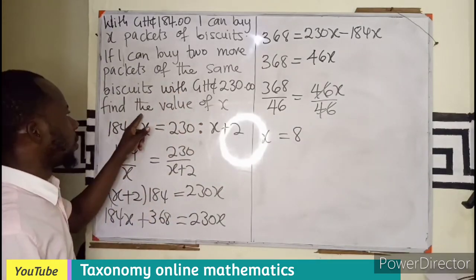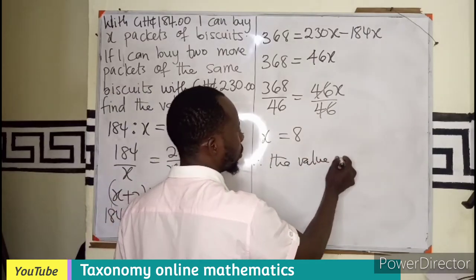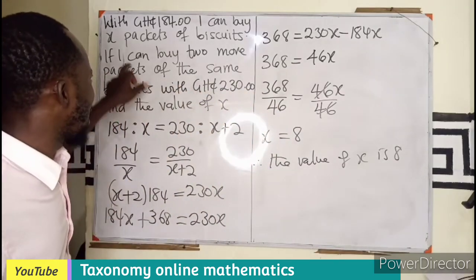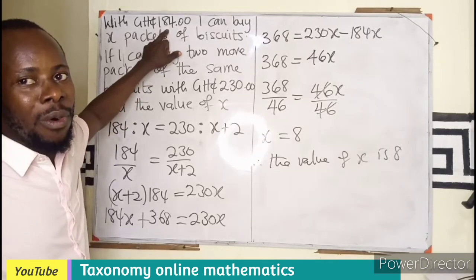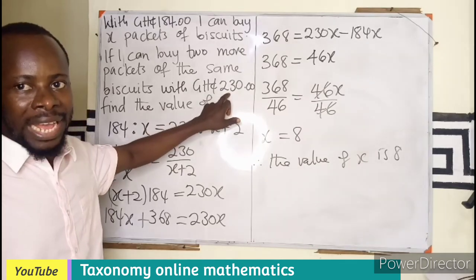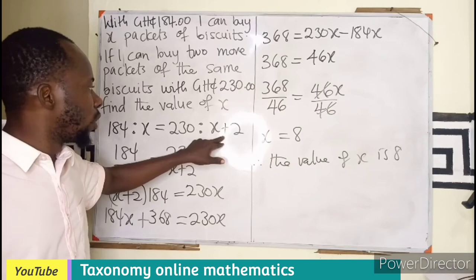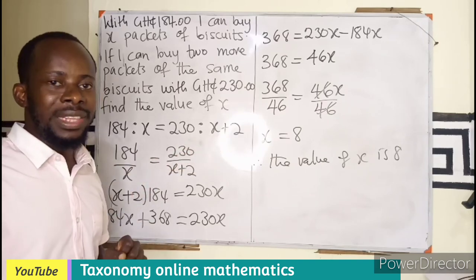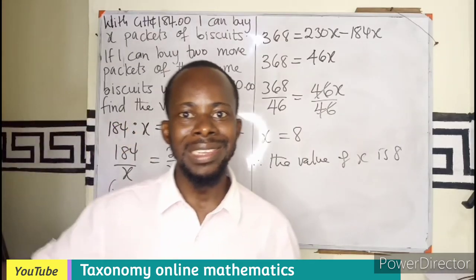Therefore, the value of X is 8. It means 8 packets of biscuits will cost 184. Then it means 10 will cost 230, meaning 8 plus 2. So 10 of them will cost 230 and 8 of them will cost 184 Ghana cedis.